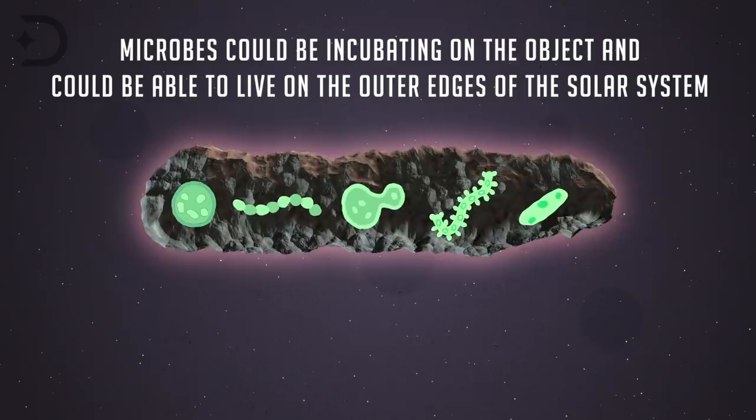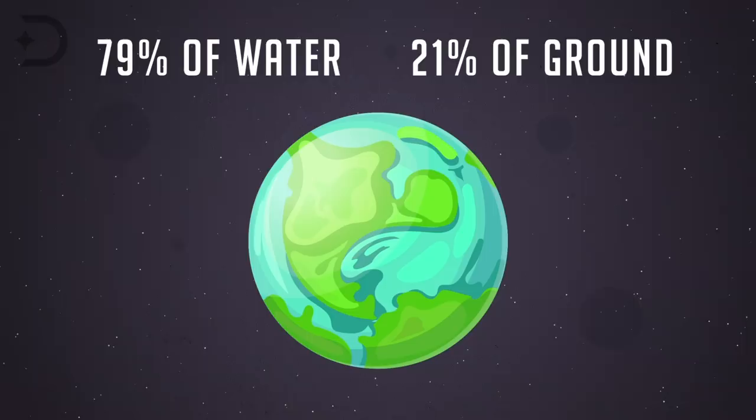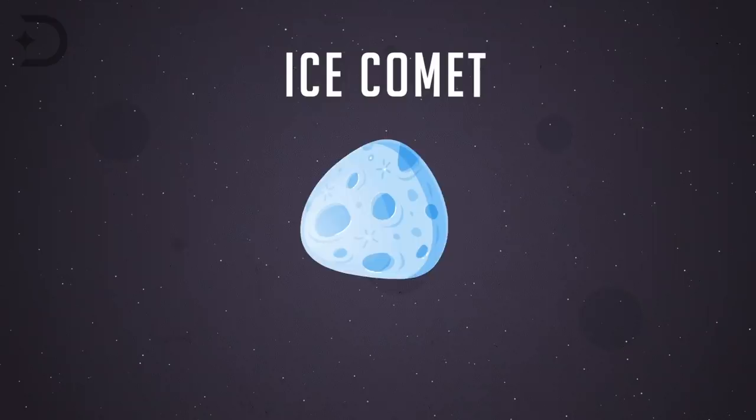Besides life, the biggest thing that distinguishes Earth from other planets is its abundance of water, which is said to have been brought by millions of ice comets which impacted the planet long ago, during the heavy bombardment period.